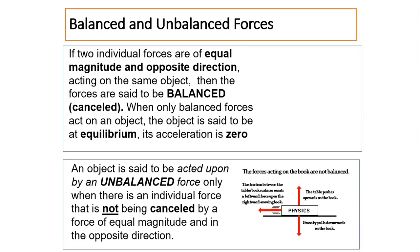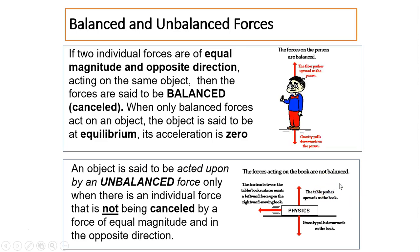Balanced and unbalanced force: if two individual forces are of equal magnitude and opposite direction acting on the same object, the forces are said to be balanced — balanced means they cancel. For example, a person standing on the floor has upward and downward forces that cancel, so the person is not moving. When only balanced forces act on an object, it is in equilibrium, and its acceleration equals zero.